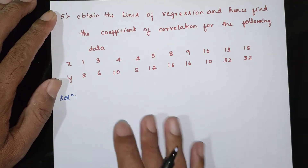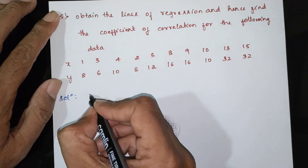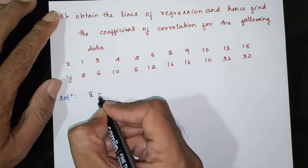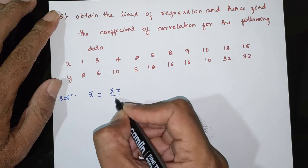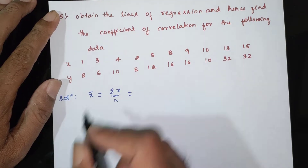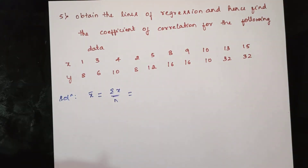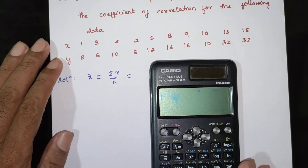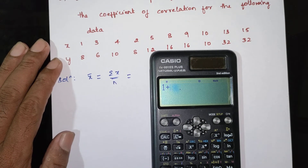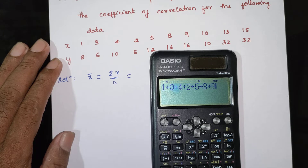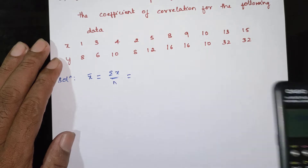Solution. First find x̄. x̄ = summation of x divided by n. Summation of x: 1 + 3 + 4 + 2 + 5 + 8 + 9 + 10 + 13 + 15 = 70.